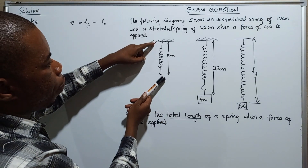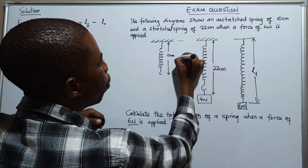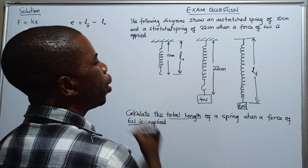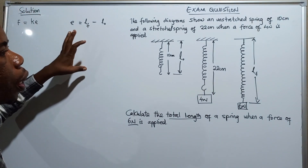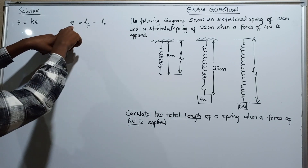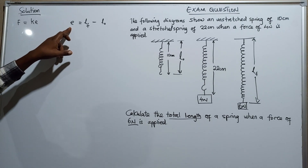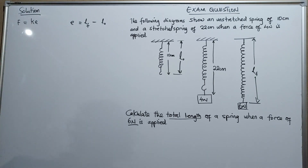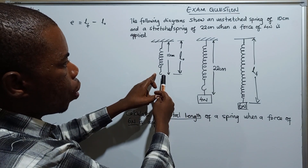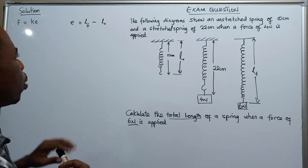So the final length is what we are looking for, and the original length is the unstretched length. We need to know the extension e to be able to answer this question, and e can be found using that equation. That is why we have been given the other measurements — before stretching the spring was 10 cm, after stretching it went to 22 cm. This gives us what we need to find the spring constant.